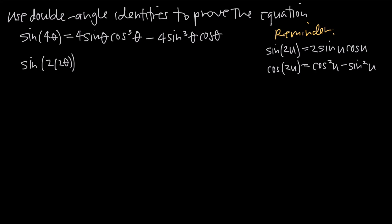What we want to do at this point is match up this 2 theta with 2u in the identity, because u has a 2 pulled out in front of it, and here in our case 2 theta has a 2 pulled out in front of it. Now that we've identified that u is equal to 2 theta, we can plug u into the formula. So we'll rewrite sine of 2 times 2 theta as 2 sine of u — and in our case u is 2 theta — times cosine of u, so cosine of 2 theta.